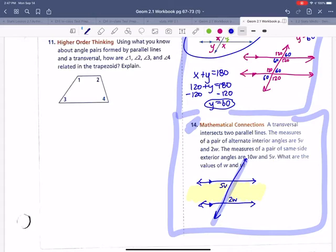And I usually like to highlight that one purple. And this is the area between the two parallel lines. If a transversal intersects two parallel lines and the measure of a pair of alternate interior angles is 5V and 2W. So this would be 5V. Maybe this one is alternate interior is 2W.